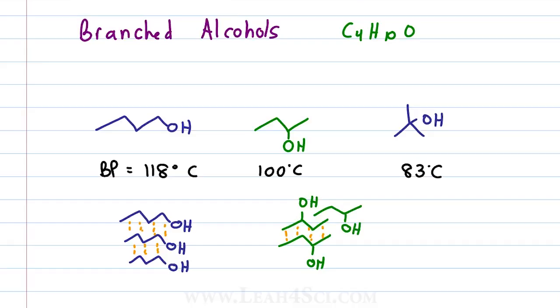The tert-butyl alcohol has so much more branching that even two molecules have a hard time getting close enough to each other and the energy to break them apart is going to be so much less which drops the boiling point down by almost 20 degrees from the sec-butyl alcohol.